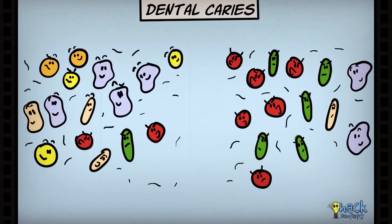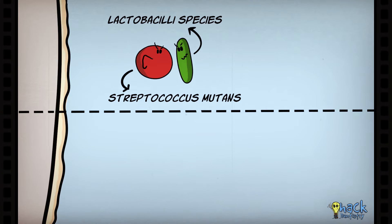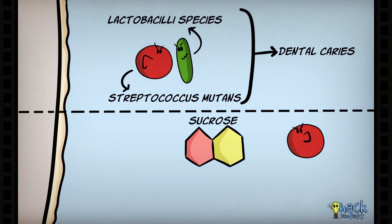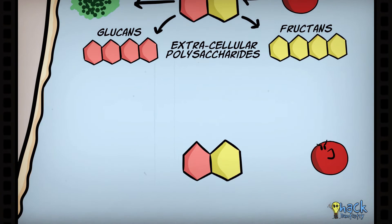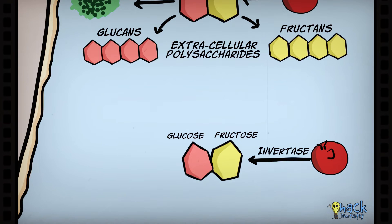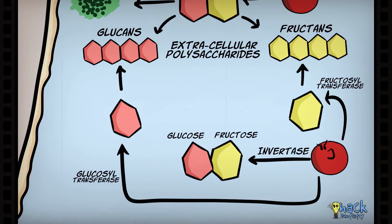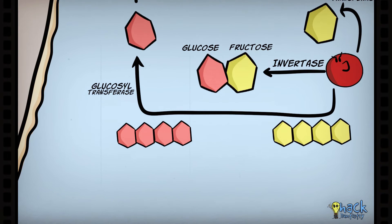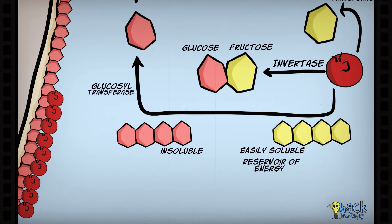As far as caries is concerned, a major shift in homeostasis could occur as a result of excess intake of sugar in the form of fermentable carbohydrates, especially sucrose. Streptococcus mutans and Lactobacillus species have been implicated in causing dental caries. Streptococcus mutans metabolizes most of the sucrose to meet its energy demands and produces lactic acid. Some of the sucrose is also used to form extracellular polysaccharides like glucans and fructans. Streptococcus mutans possesses an enzyme called invertase which can cleave sucrose to glucose and fructose, and using enzymes called glucosyltransferase and fructosyltransferase, further converts these to extracellular polysaccharides glucans and fructans respectively. Fructans are easily soluble and are used as a reservoir for further energy needs. However, glucans are insoluble and help in further adherence and accumulation of more caries-causing Streptococci.